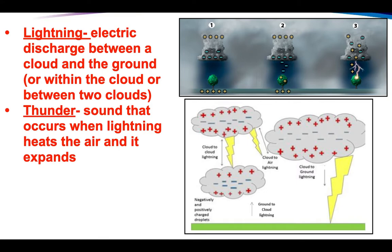That's the reason why these two things go together. Now, what do we always notice first? Lightning — because light travels faster than sound. The closer those two are together... I remember when I was a kid, we learned that when you see the lightning, you start counting one Mississippi, two Mississippi, three Mississippi. The closer those are together, the closer you are to the lightning. If the lightning's far away, you're going to have a much stronger lag time between the two.